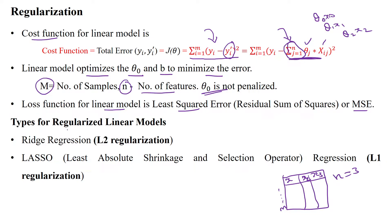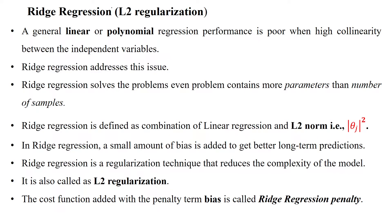There are two types of regularization approaches for regression models. Ridge regression uses the L2 norm, so it is called L2 regularization. LASSO — Least Absolute Shrinkage and Selection Operator — uses the L1 norm, so it is called L1 regularization. We will first look at L2 regularization.